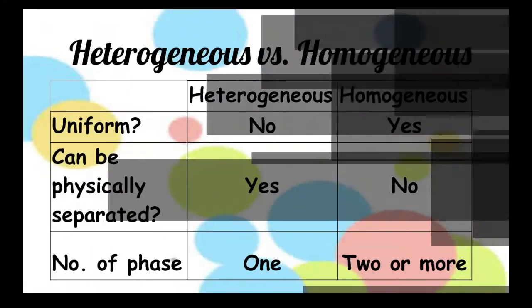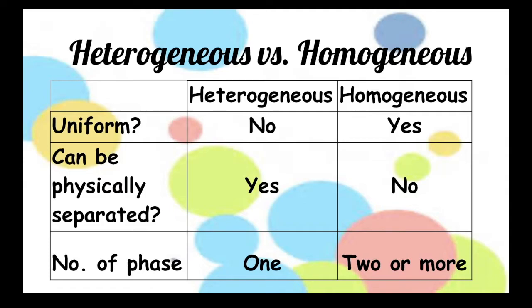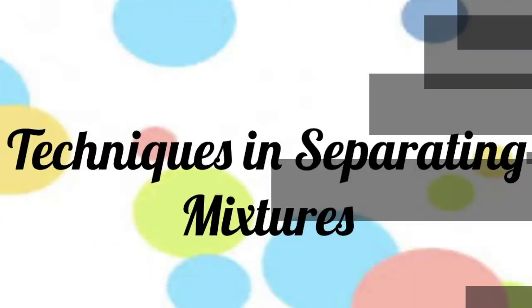Let's have a quick view comparison of these two mixtures. When it comes to uniformity, heterogeneous is not uniform while homogeneous is directly opposite. Heterogeneous mixtures can be physically separated while homogeneous is not. And when it comes to the number of phases, homogeneous always have only one phase while heterogeneous have two or more phases.